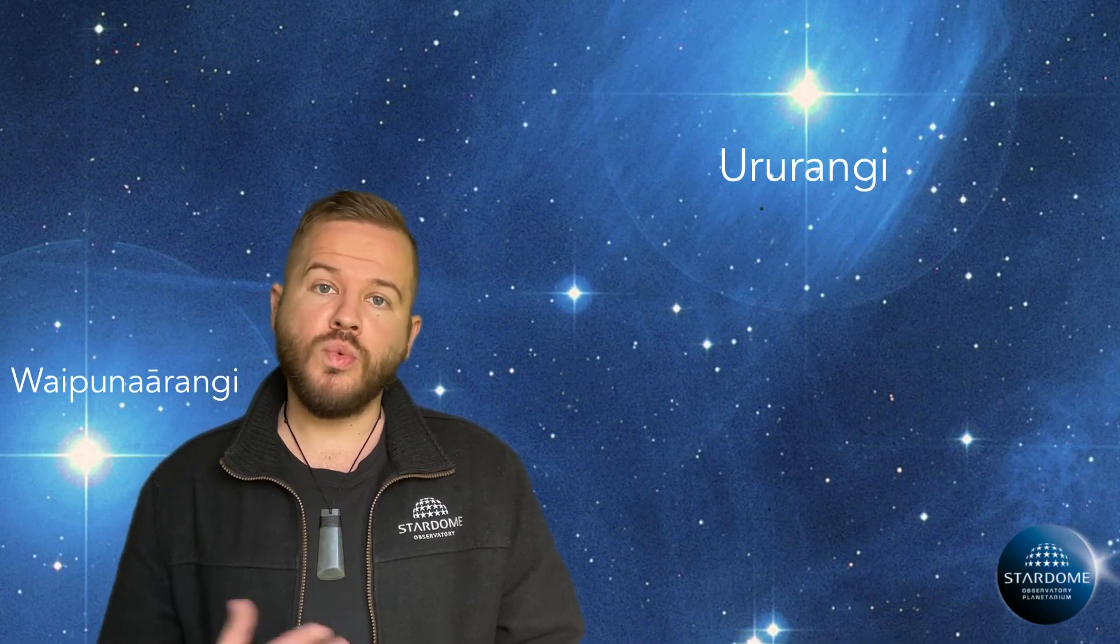The two stars of Tupu Arangi and Tupu Anuku represent food sources from the sky and from the ground. Ururangi and Waipuna Arangi represent the winds and the rains.